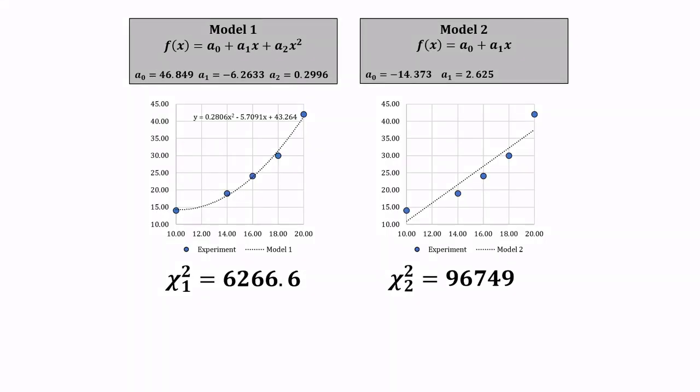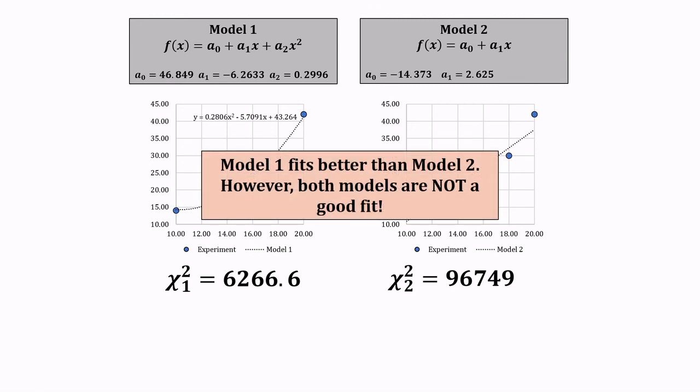From here, we found that model 1 fits better than model 2, since the chi squared of model 1 is smaller than the chi squared of model 2.